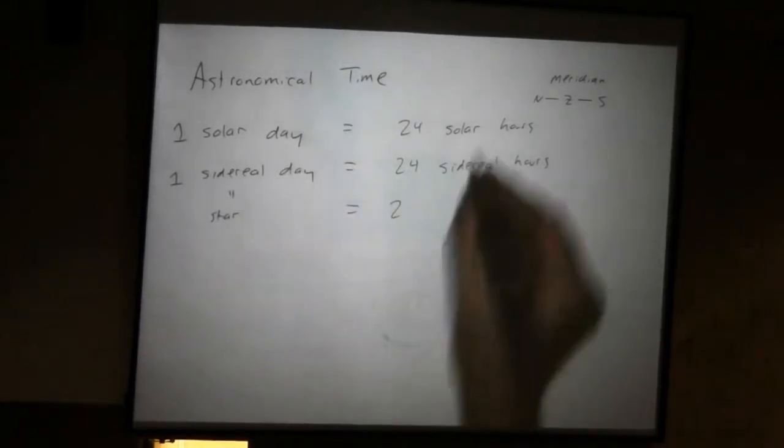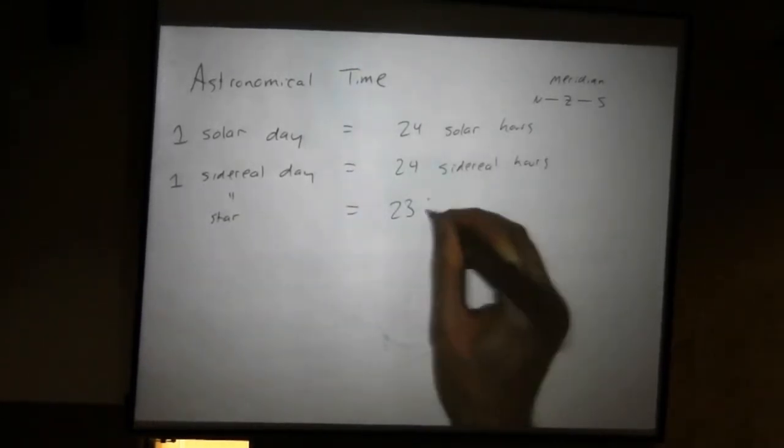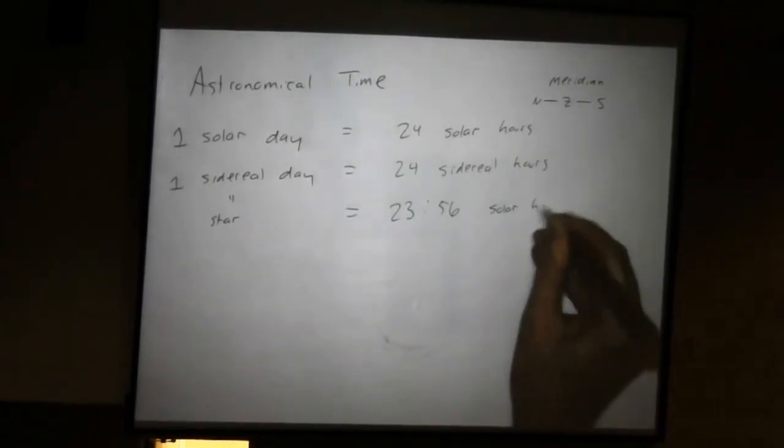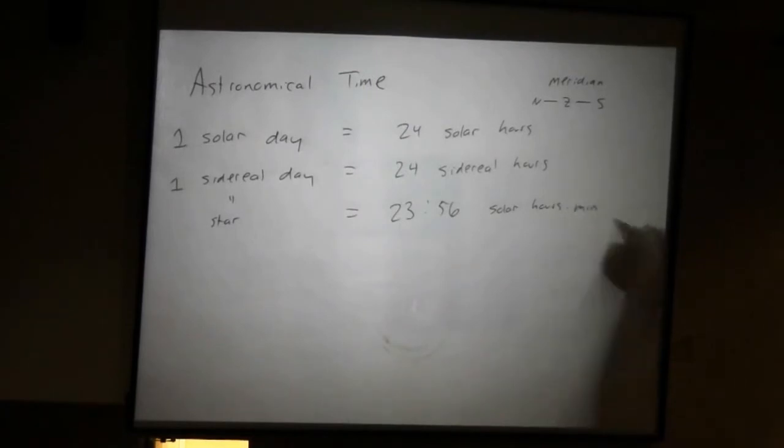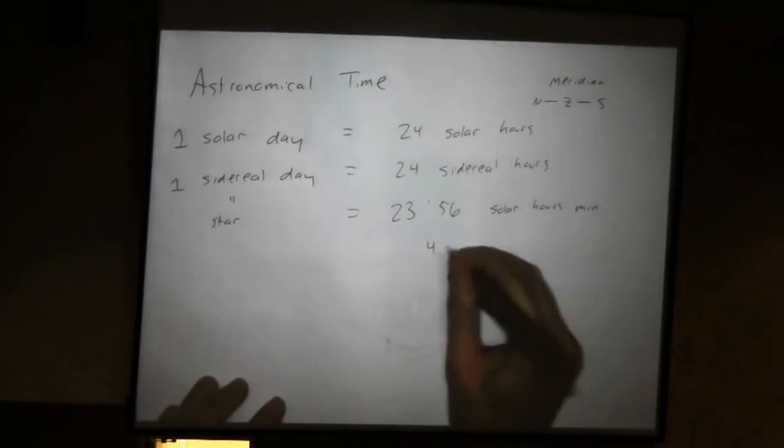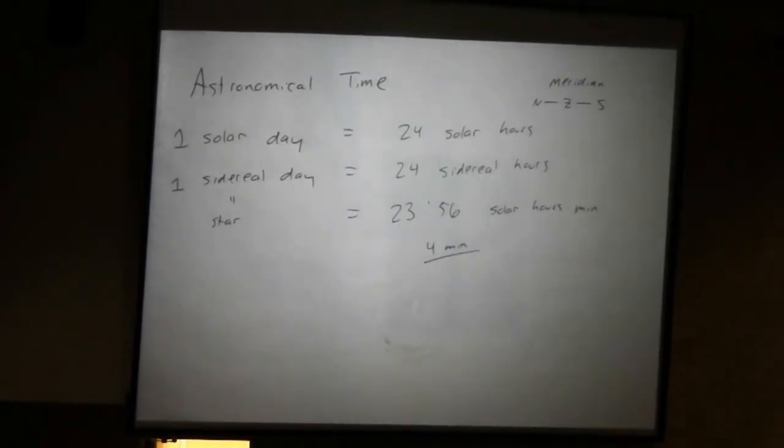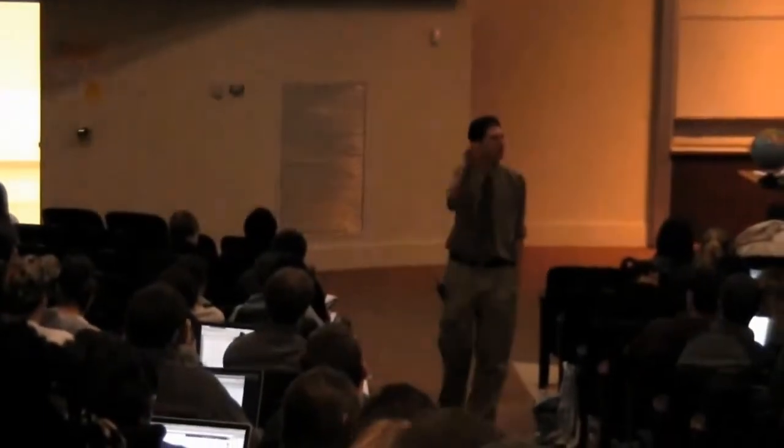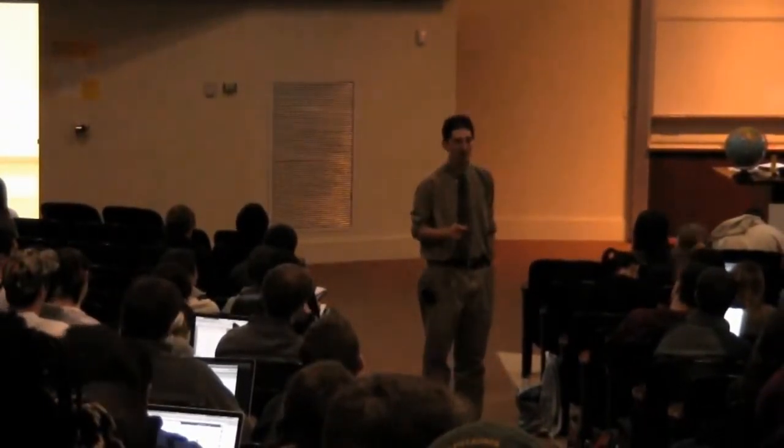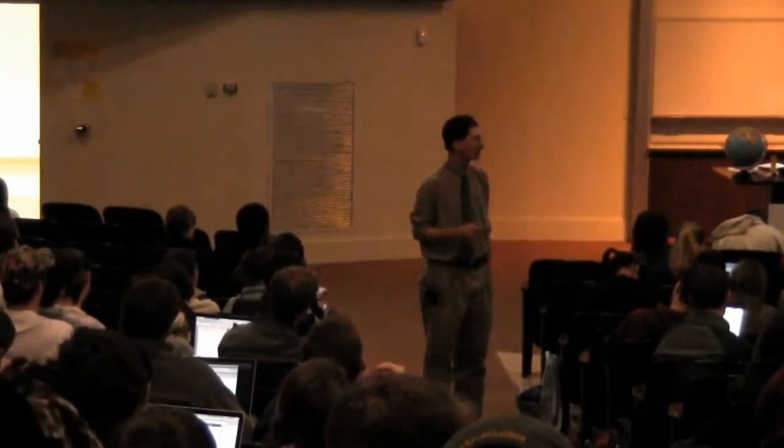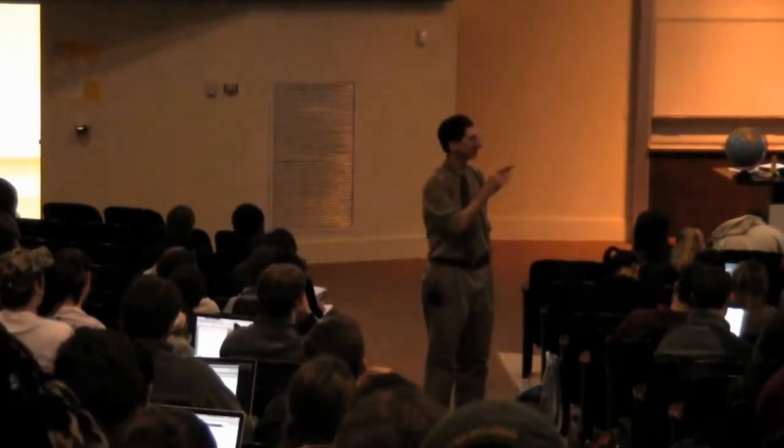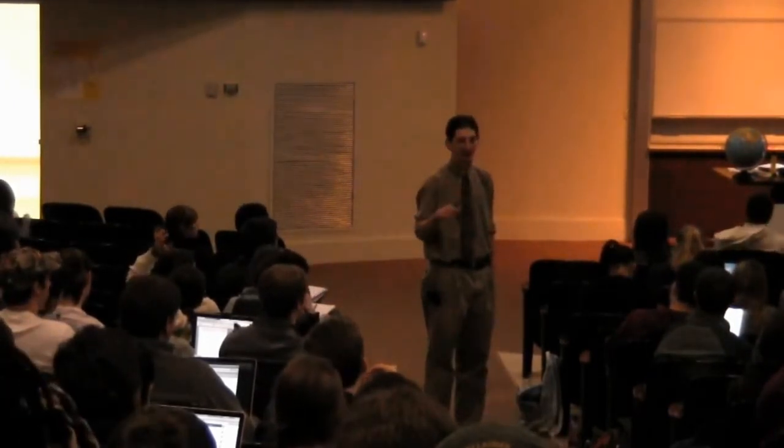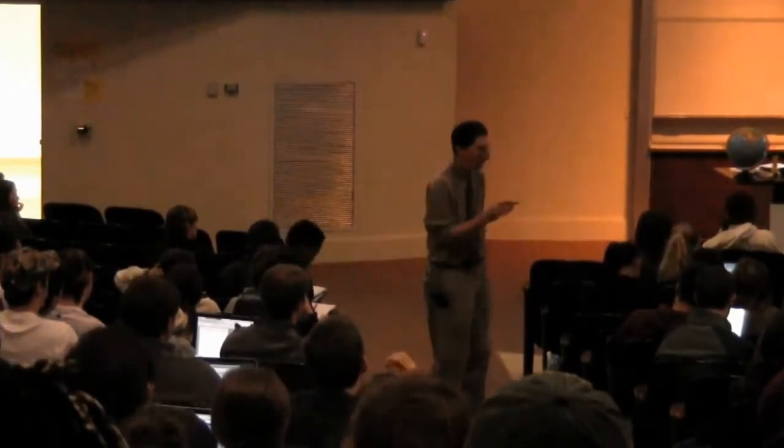So if we write one sidereal day in terms of solar hours, it's 23 solar hours and 56 solar minutes. So four minute difference. We need to explain that difference. So I could ask you, why is the sidereal day shorter than solar day? But let me ask it the other way. Why is the solar day longer than the sidereal day? We know Earth is spinning on its axis. That's the main reason why everything's going around once a day. But what is Earth also doing with respect to the sun that's going to slightly change the length of the solar day?